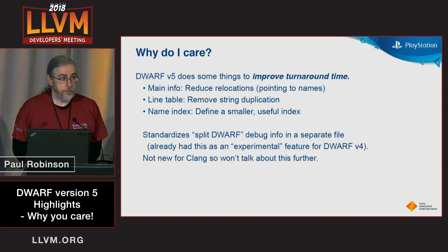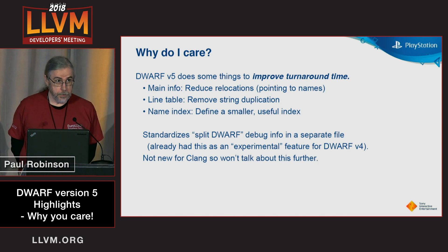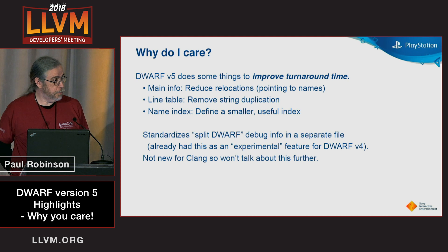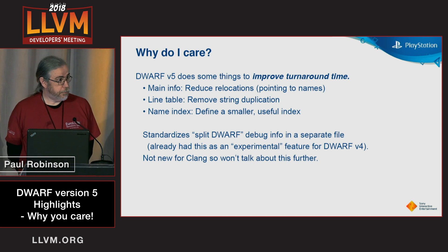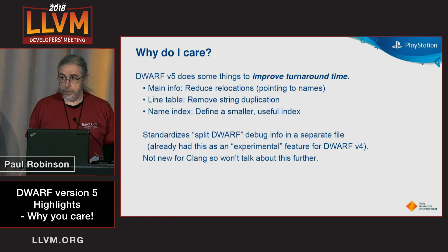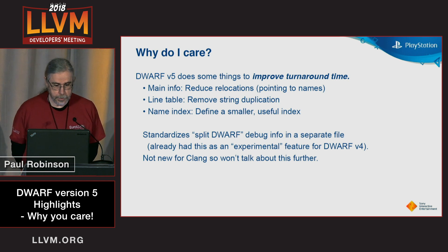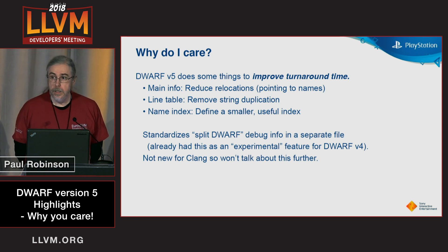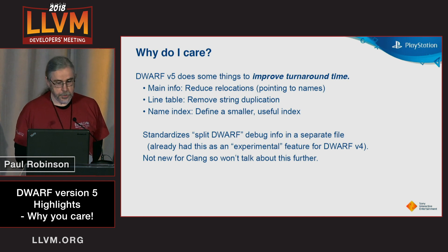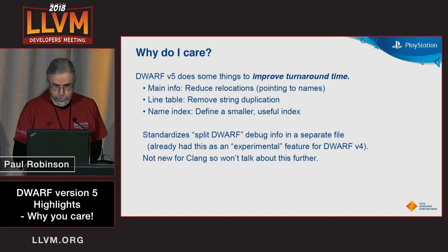DWARF 5 does a few things to improve turnaround time. In the main info, we're reducing relocations. All of the references from the main debug info to debug_str are relocations, so we can have fewer of those. The line table has some duplicated strings — we can eliminate that. The old name index is pretty useless, so we have a smaller and actually useful one.